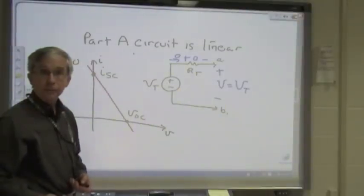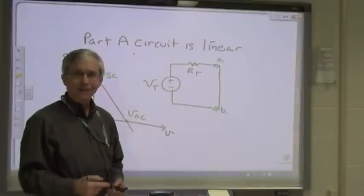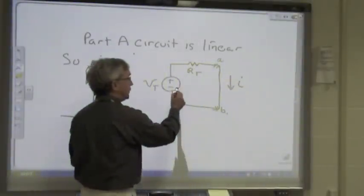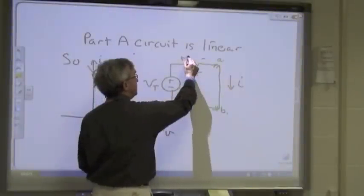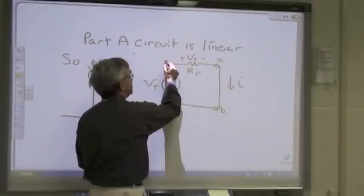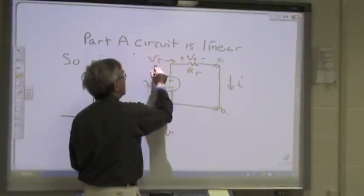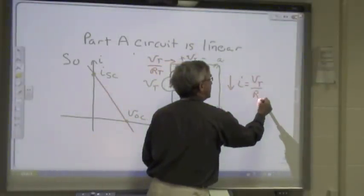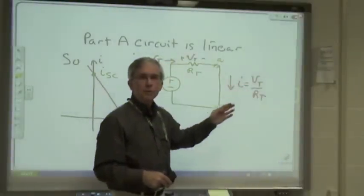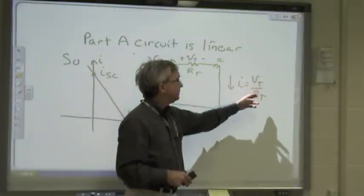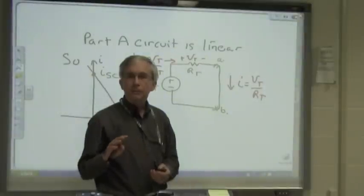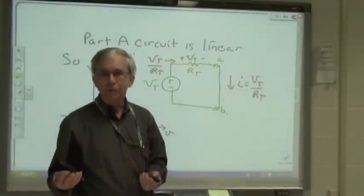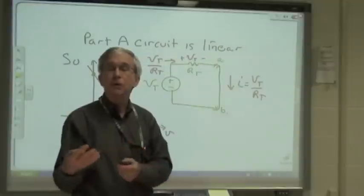What about the short circuit current? We've drawn a short circuit across terminals A and B to find the current flowing through it. By Kirchhoff's voltage law, the voltage across the resistor is going to be V sub T, and by Ohm's law the current through the resistor is V sub T over R sub T. Therefore, the current through the short circuit is also V sub T divided by R sub T. If we choose R sub T such that V sub T over R sub T equals the short circuit current of circuit A, we establish the same short circuit current, and the two circuits will be equivalent as far as circuit B is concerned.